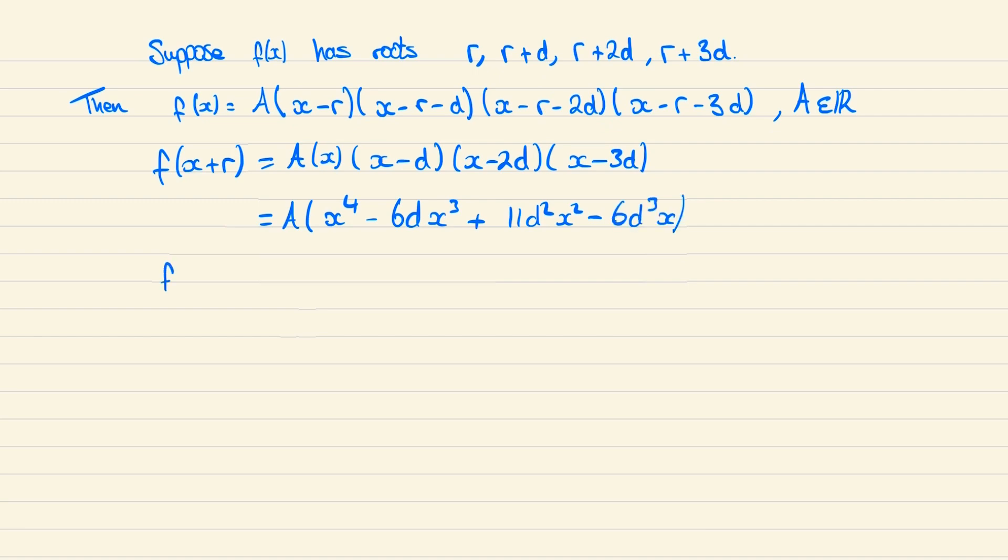And now if we consider the derivative of f of x plus r then this is A times 4x cubed minus 18d x squared plus 22d squared x minus 6d cubed. And we'll pull out a factor of 2 to write this as the following.